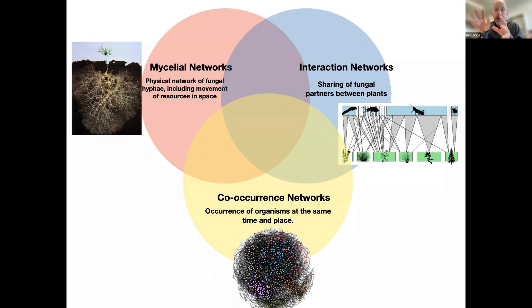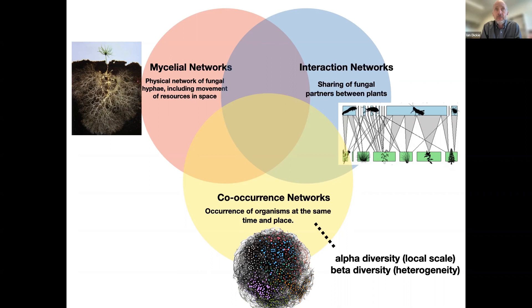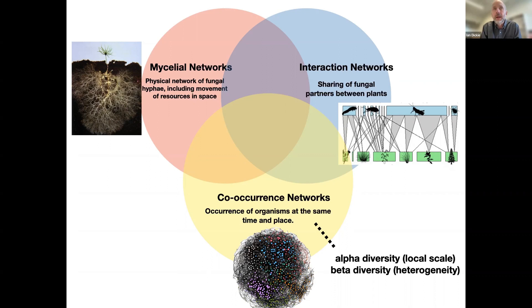I'm going to look at two other meanings of the word network. The first are interaction networks: when two organisms share a partner, an increase in one species can affect the other by changing the shared partner, whether that's a mutualist, a pathogen, or an herbivore. Related to that is the idea of co-occurrence networks, frequently analyzed by microbial ecologists to look at what species occur at the same time and place without necessarily assuming they interact. I'll be thinking mostly about co-occurrence networks in terms of alpha diversity — species present in one spot — and beta diversity, which is the heterogeneity of communities: how much does diversity change as you move from one spot to another?